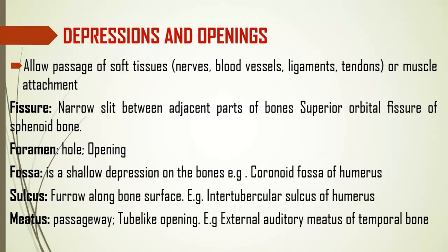The foramen is simply an opening within the bone. We're going to see most foramina especially in the skull. The fossa is a shallow depression on a bone — for example, the coronoid fossa of the humerus. A sulcus is a groove along the bony surface. A meatus is a passageway — like a tunnel in the bone.